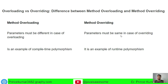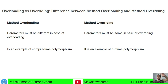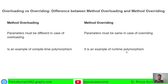In overloading, the parameters must be different. In overriding, the parameters must be the same. Method overriding involves two classes with a parent-child relationship, where the child class overrides the parent class's method. Method overloading is an example of compile-time polymorphism, while method overriding is an example of runtime polymorphism.